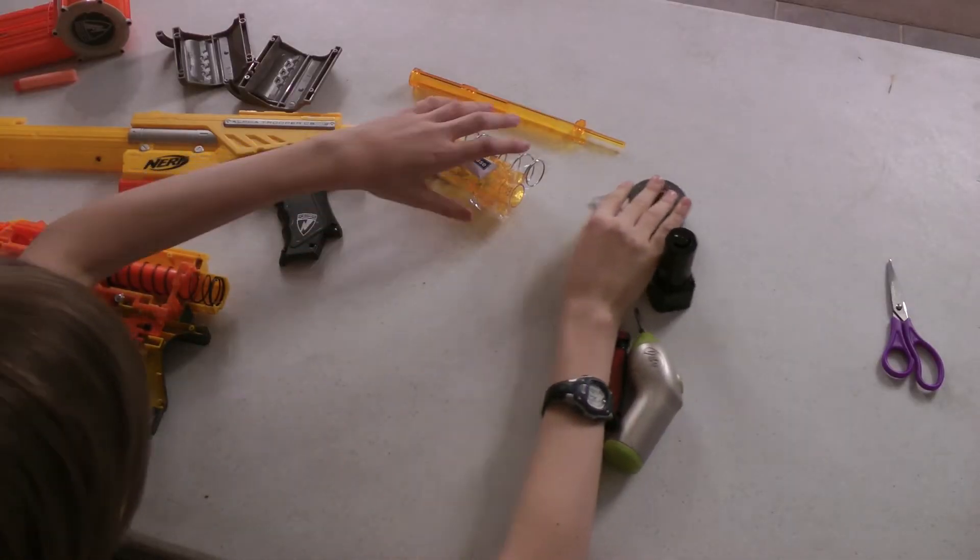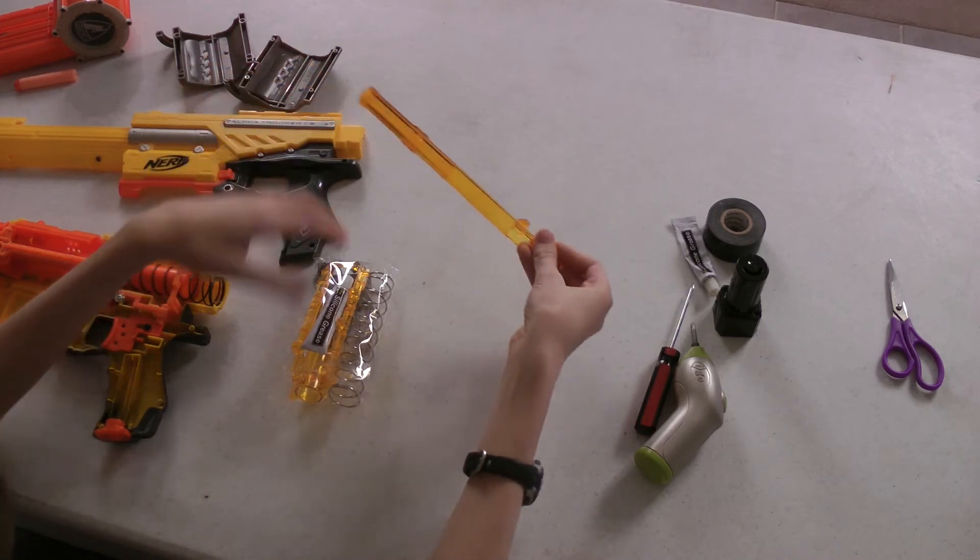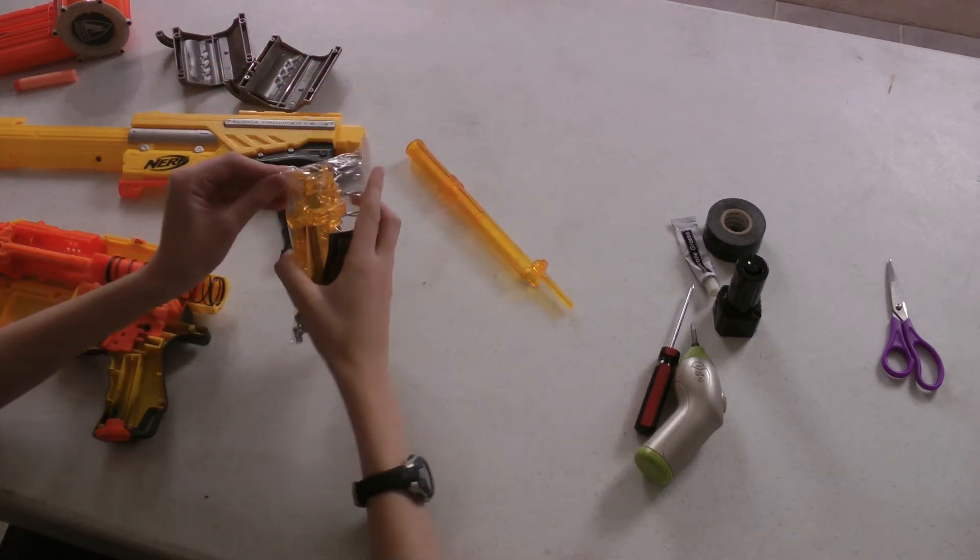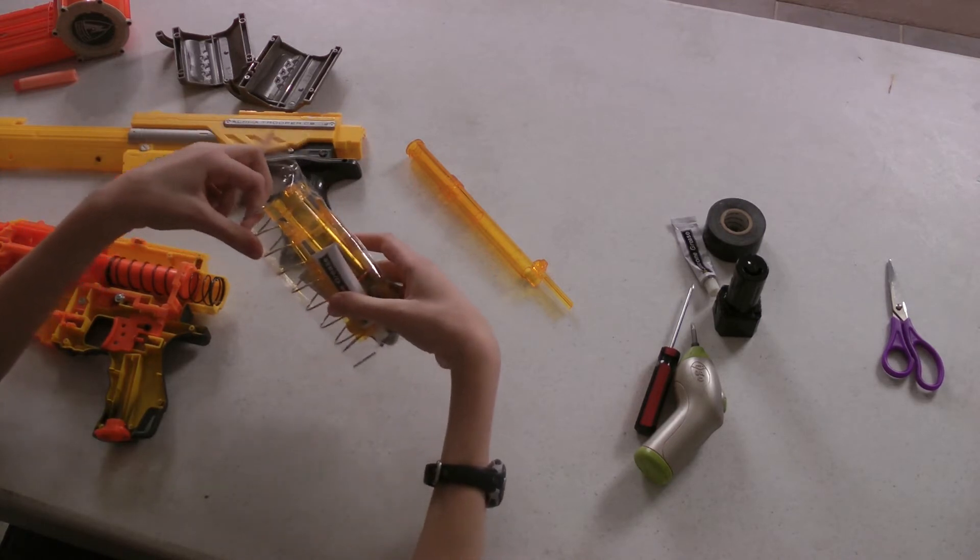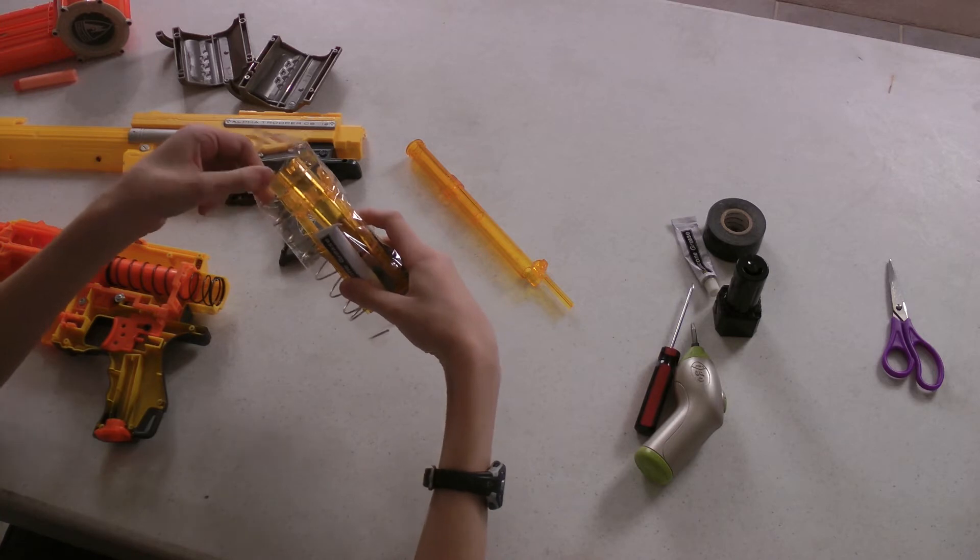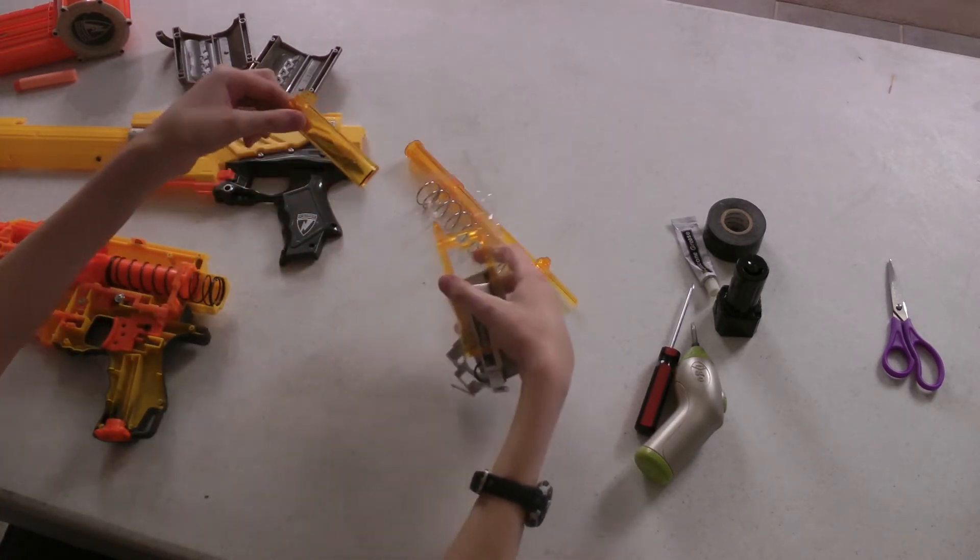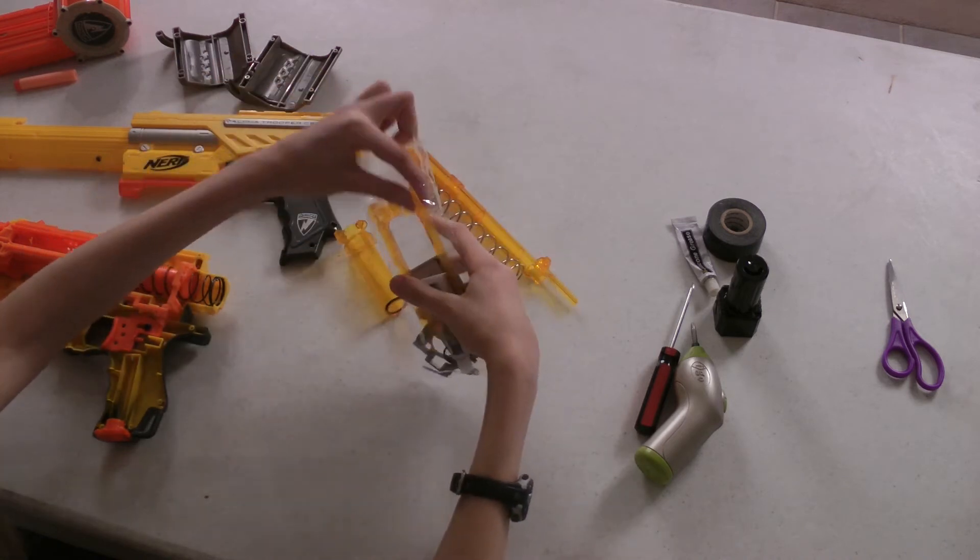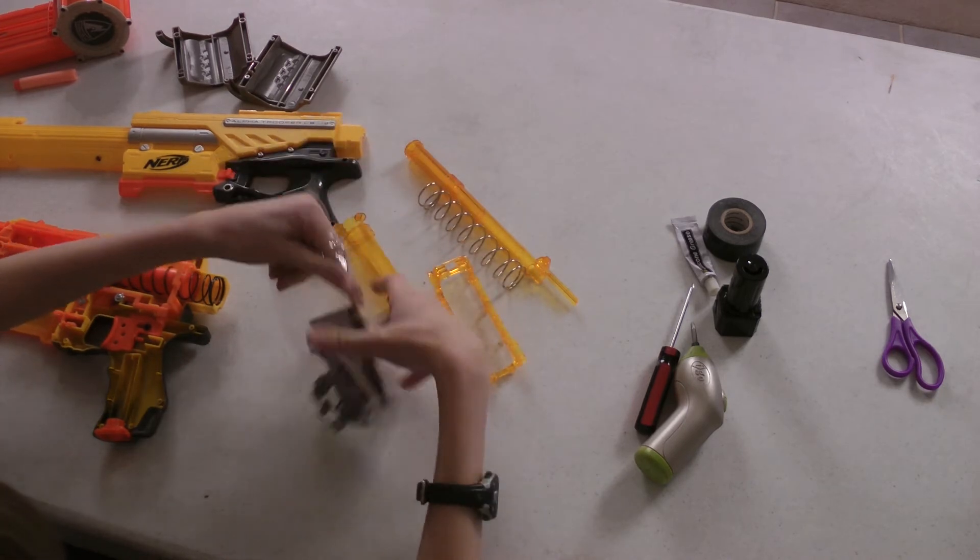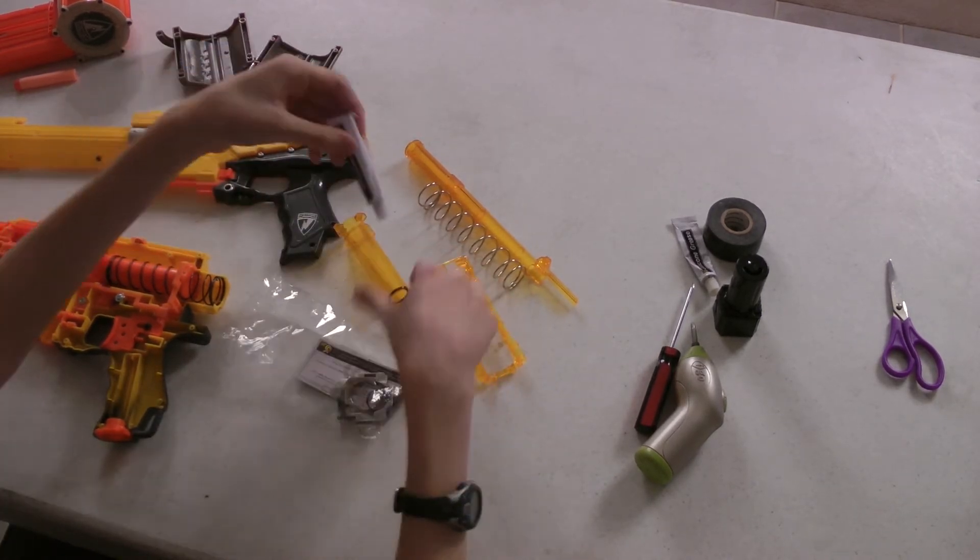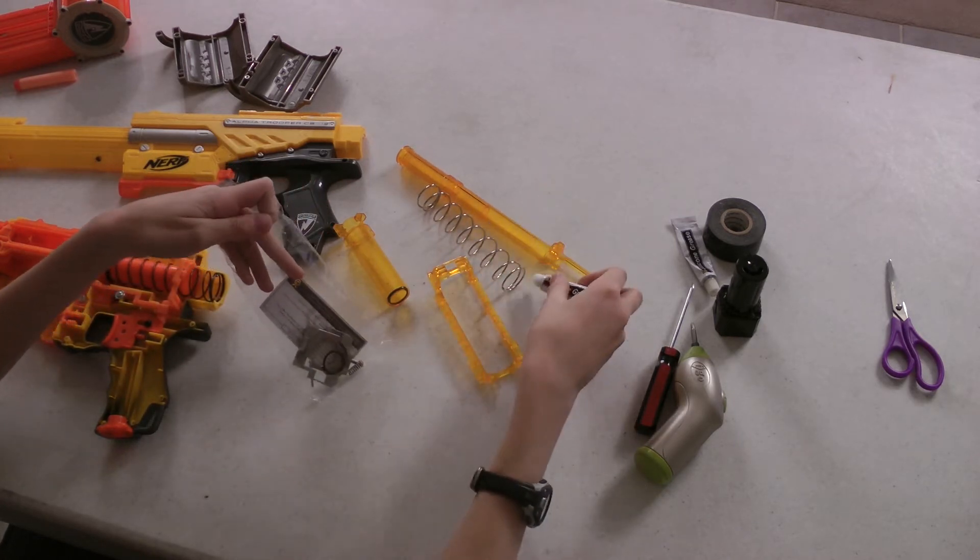Before we get into the gun, let's do a breakdown of these parts. This is the plunger tube right here. And then let's open this bag up real quick. This is the 5kg spring. The plunger. The sled. Silicone grease, which you can grease the barrel with or the plunger tube with.